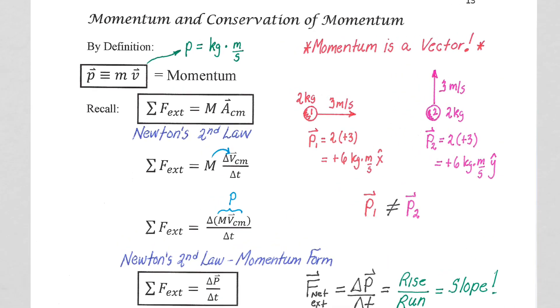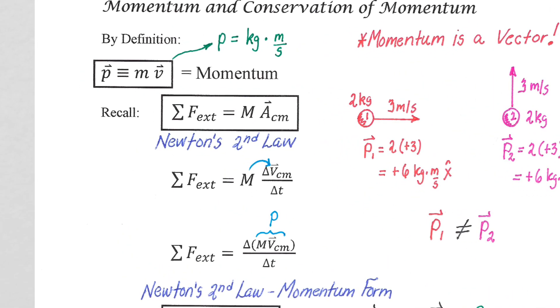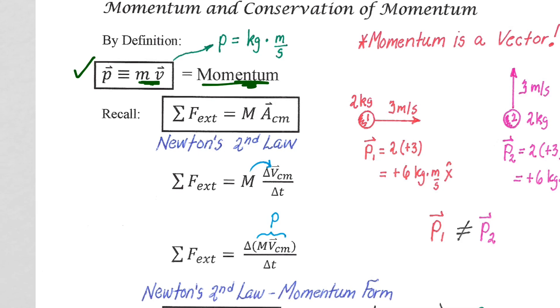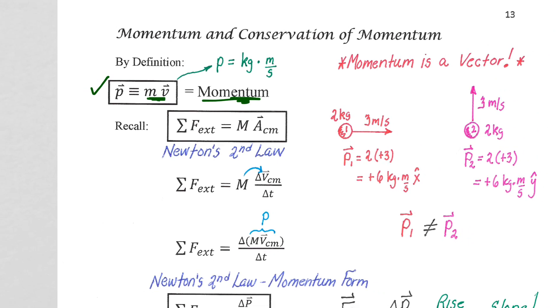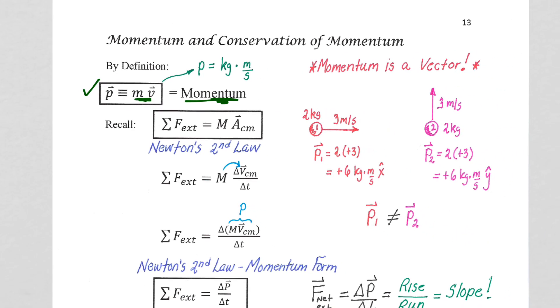Momentum, by definition, so no proof, is just given to you as momentum equals the mass of the object times the velocity of the object. It's a product quantity. We've seen this before with force. Force equals mass times acceleration is a product quantity. Momentum is a product quantity.